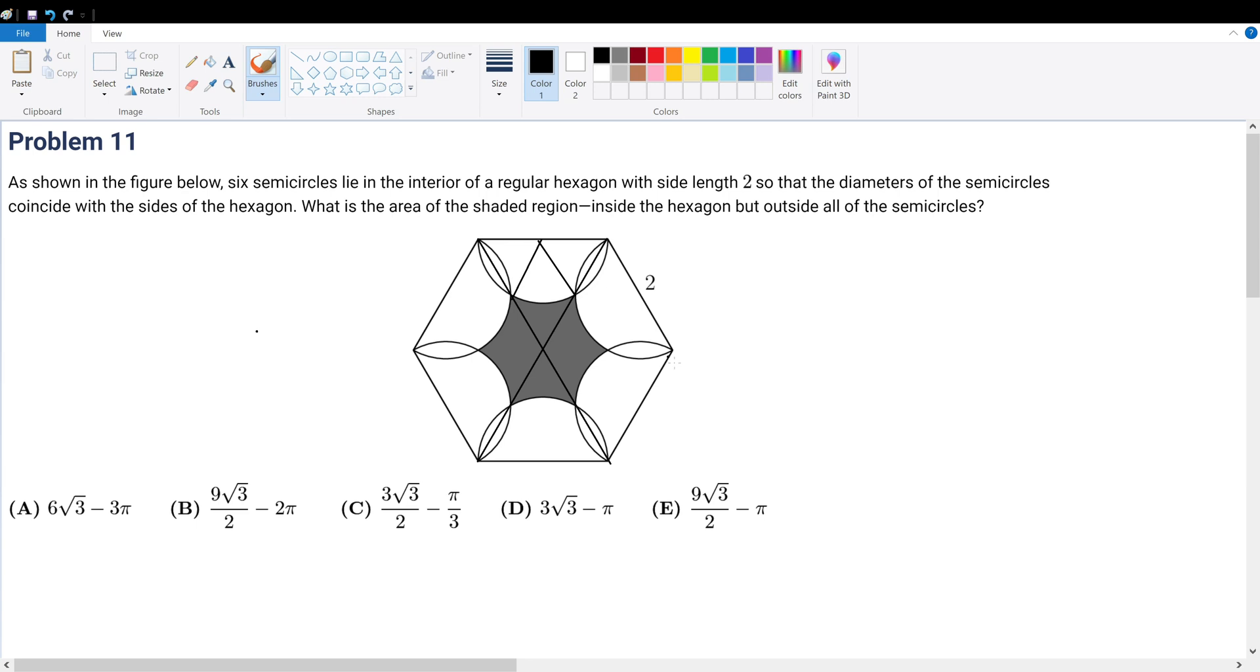Problem 11. As shown in the figure below, we have 6 semicircles, and they all combine together to form this hexagon-looking shape. And we're trying to find the area of that interior shaded region.